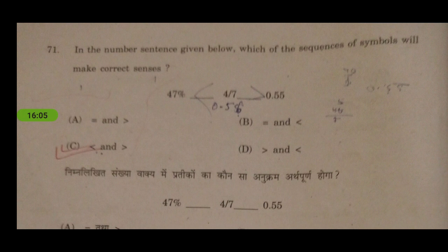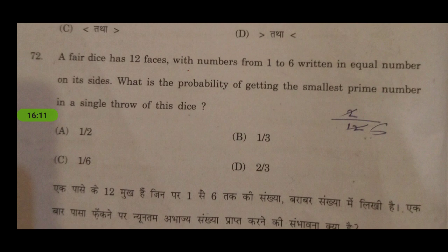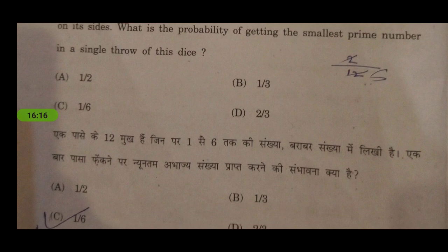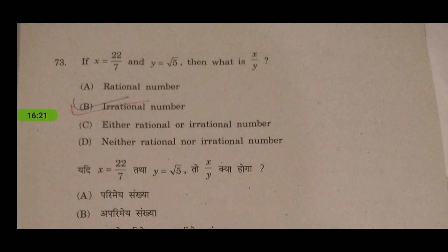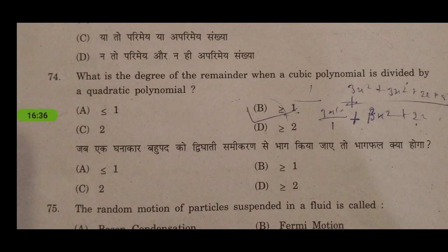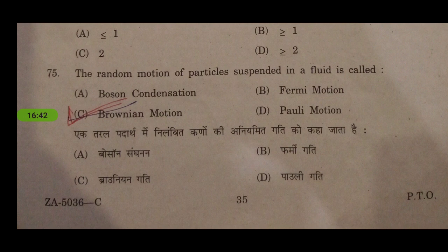There are five questions from maths. The first is easy — you can see the question and answer. The second is from probability, which math students can solve easily. The third asks for an irrational number — an irrational number is one that gives a decimal expansion to infinity, and the square root of 5 is such a number, so it would be an irrational number. The fourth is a polynomial question.